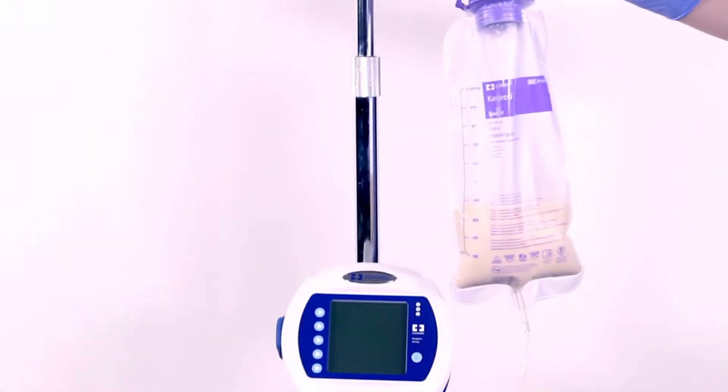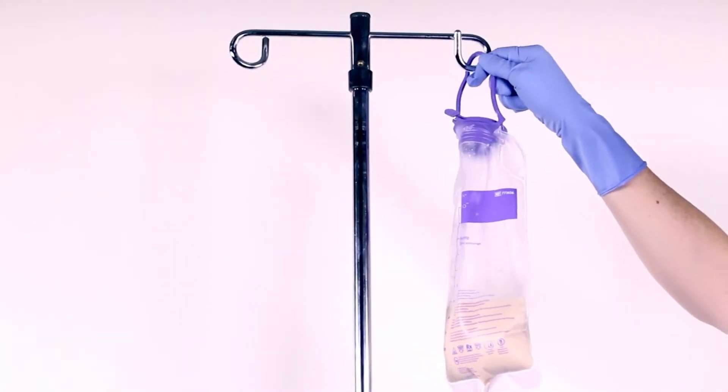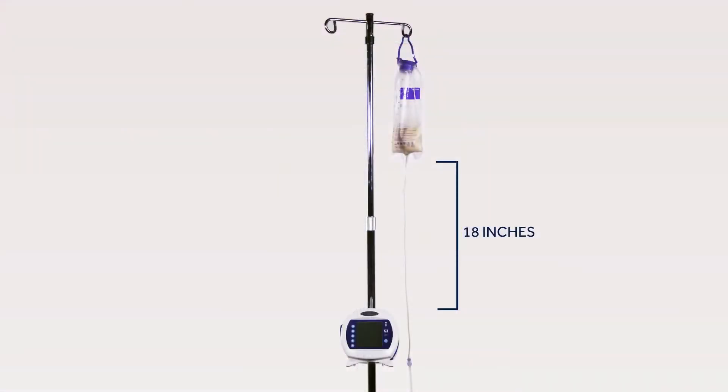In order to achieve proper accuracy, the bottom of the feeding set bag must be 18 inches above the top of the feeding pump. Failure to hang the set to the proper level can result in inaccurate system feeding.